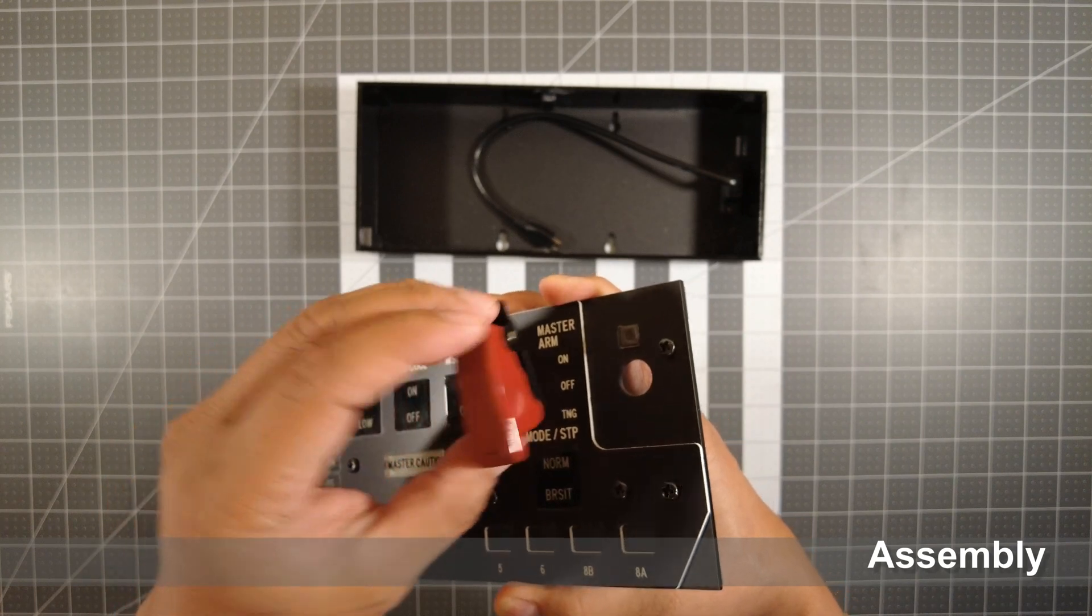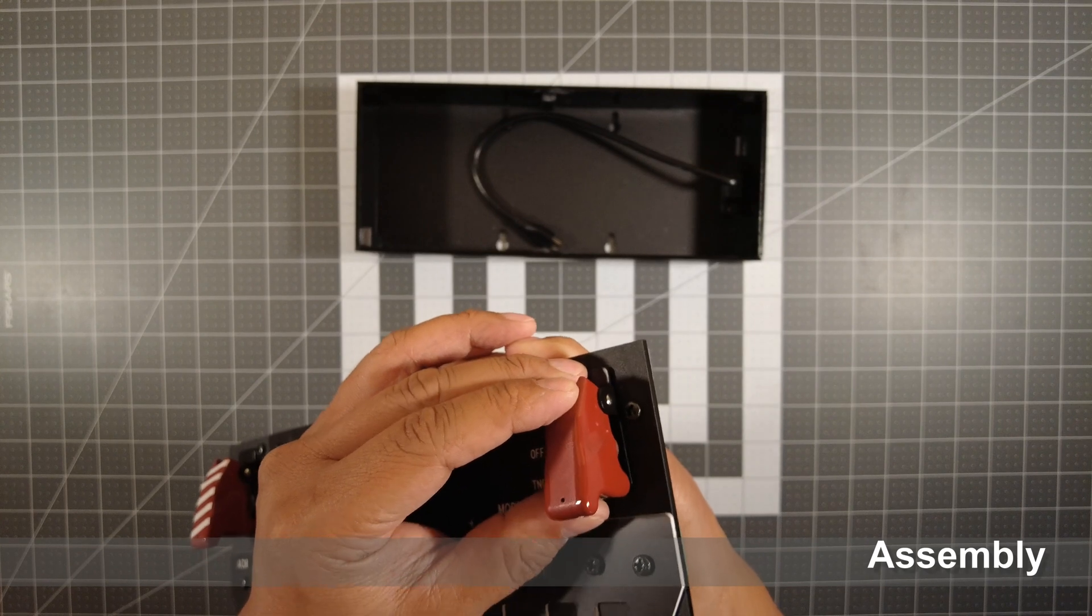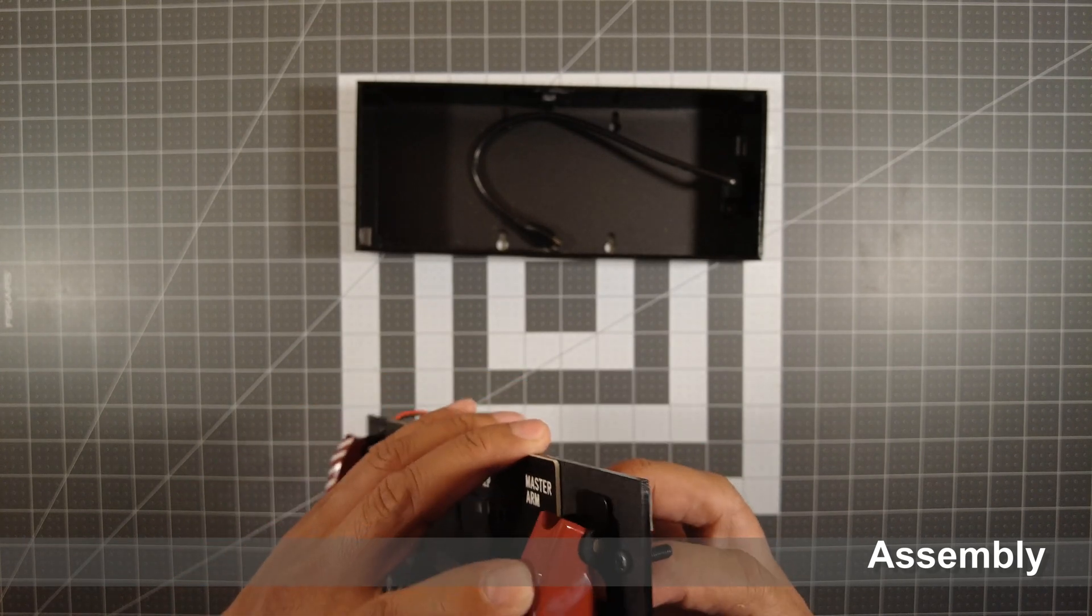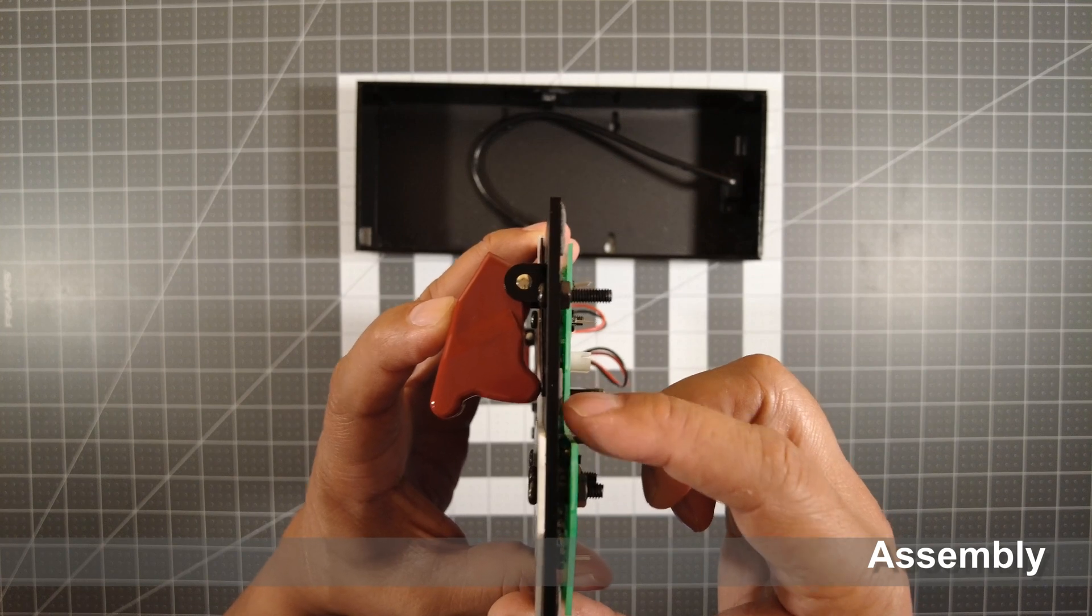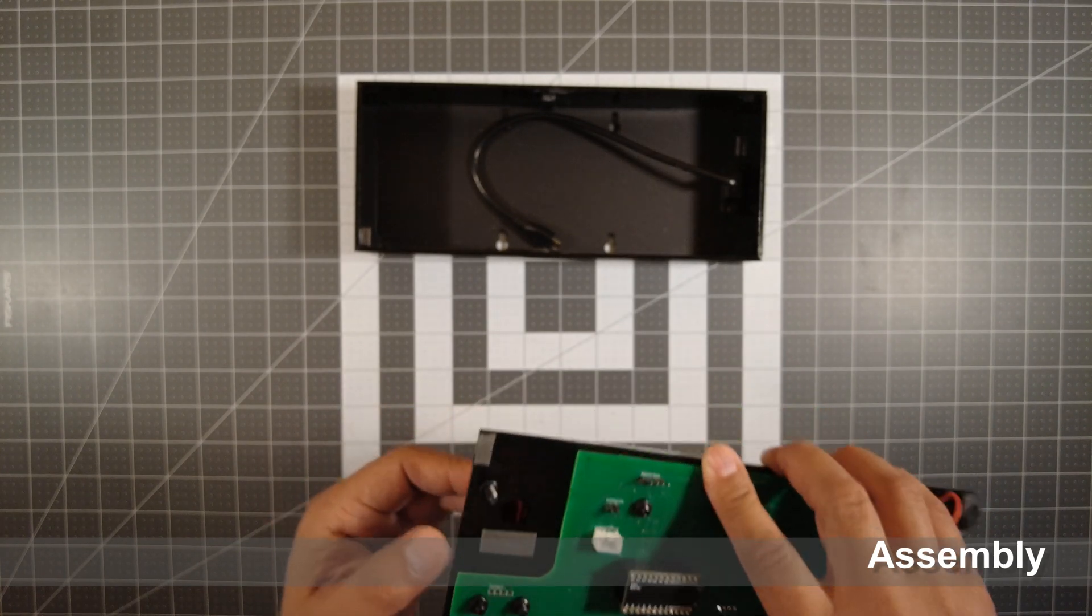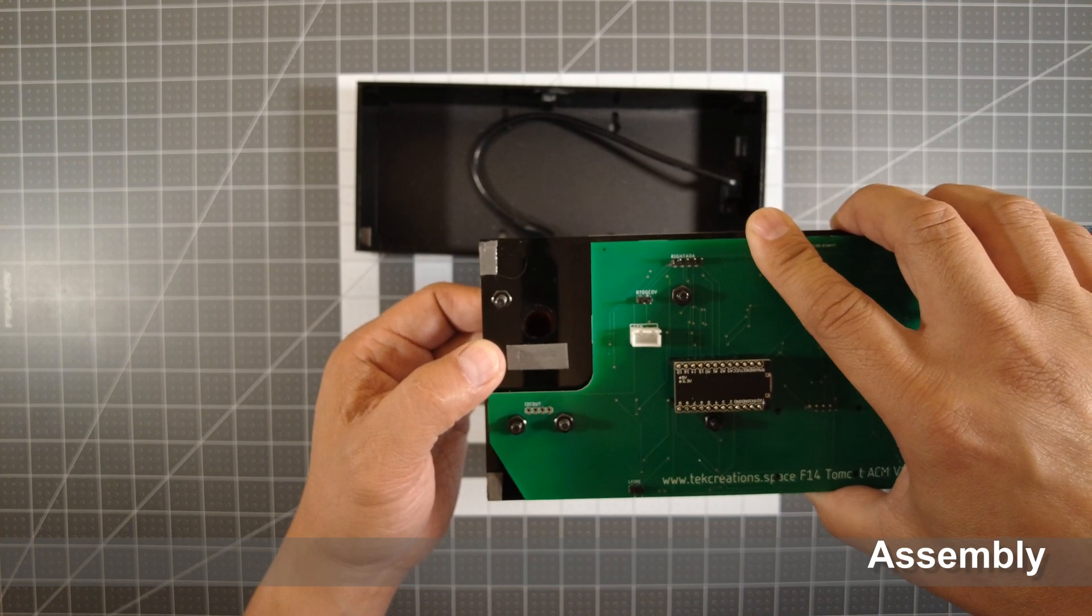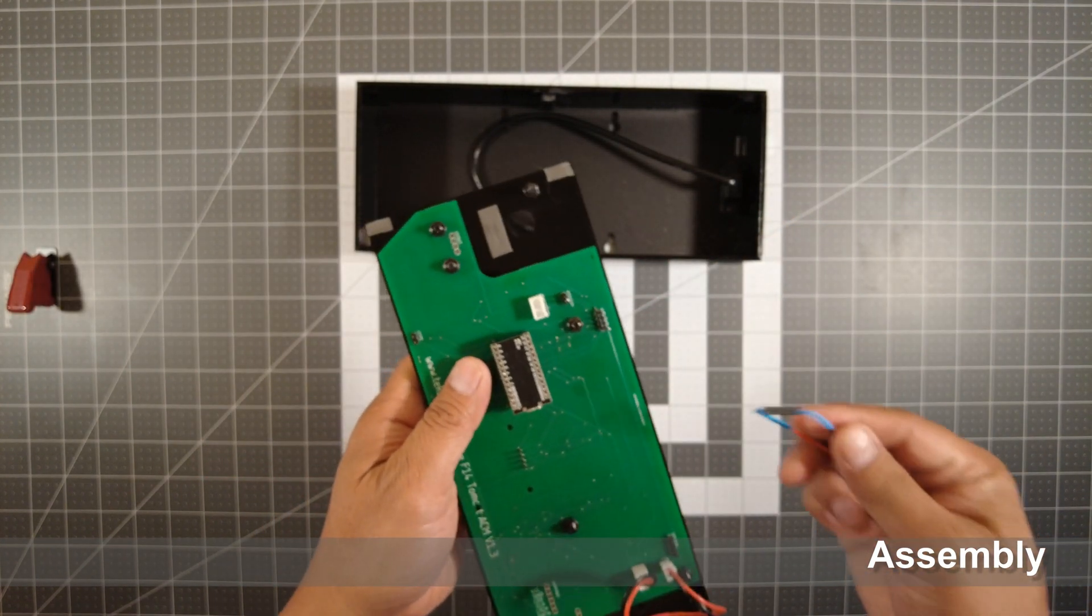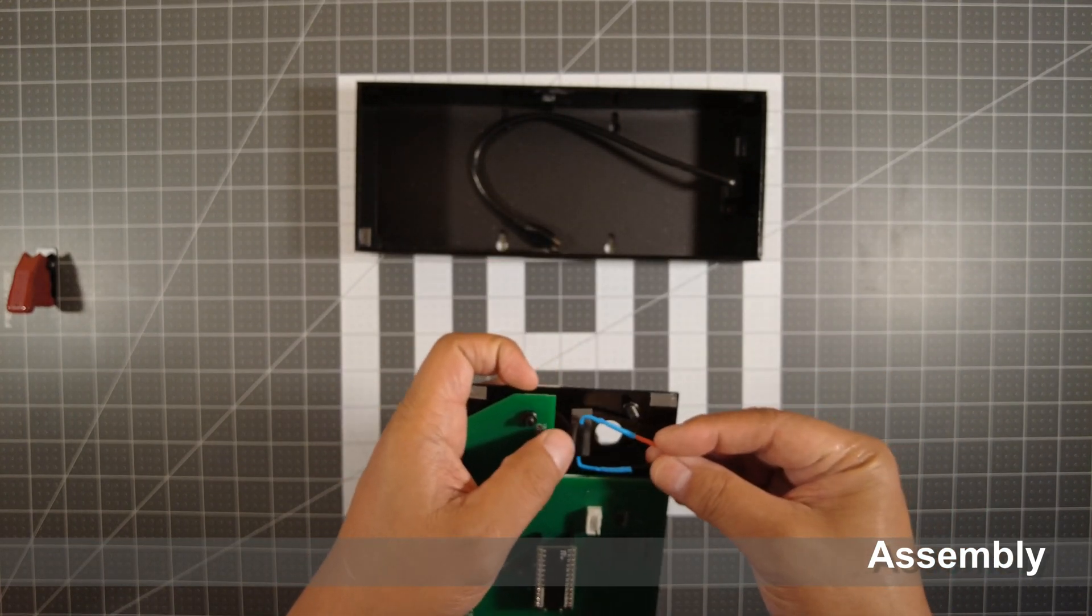We're going to soft fit the switch guard and make sure it's lined up. Then we're going to see where the magnet will line up when it's closed. Then place double stick tape where you think it's going to close. Take your reed switch that you assembled earlier and place it on the mounting tape.